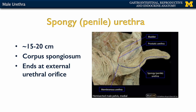The membranous urethra leads into the most distal as well as the longest portion of the male urethra — the spongy or penile urethra. This traverses the entirety of the penis. One reason it's called the spongy urethra is because it traverses the corpus spongiosum, which is the unpaired erectile tissue of the penis. This leads to the exit point, the external urethral orifice, through which both urine and semen exit the body.